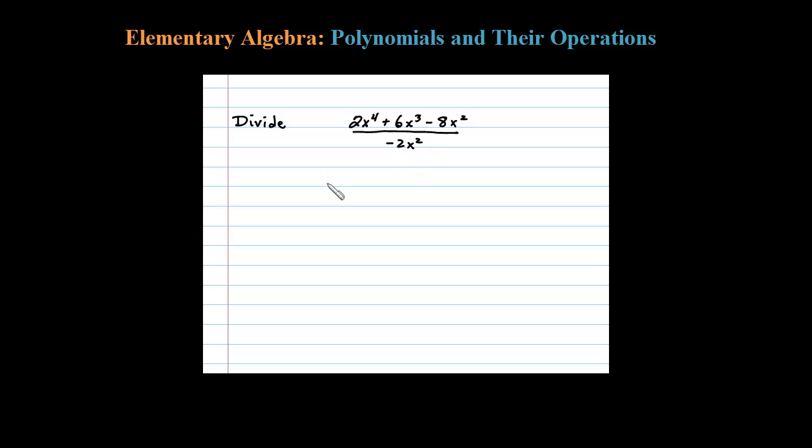When dividing by a monomial like that, what I like to do is think of this as a common denominator. So we have 2x to the 4th divided by negative 2x squared, plus 6x cubed divided by negative 2x squared...